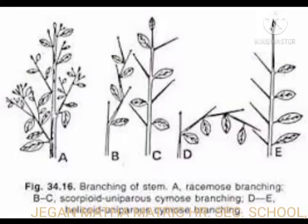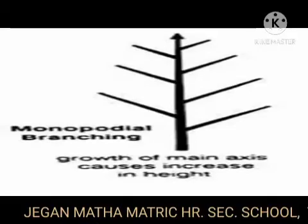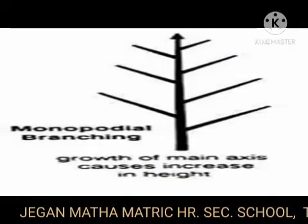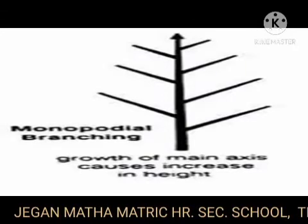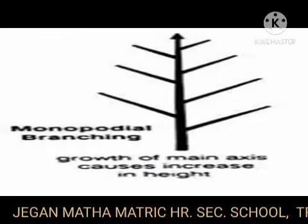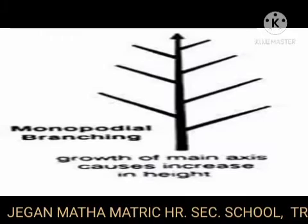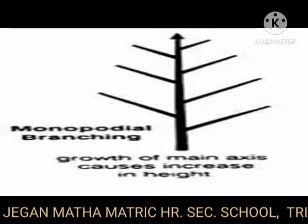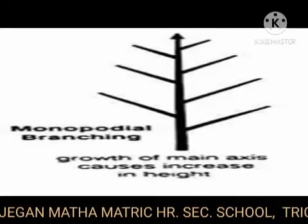Based on growth pattern, stems may show indeterminate or determinate growth. In indeterminate growth, the terminal bud grows uninterrupted and produces several lateral branches. This type of growth is also known as monopodial branching, example Polyalthia.